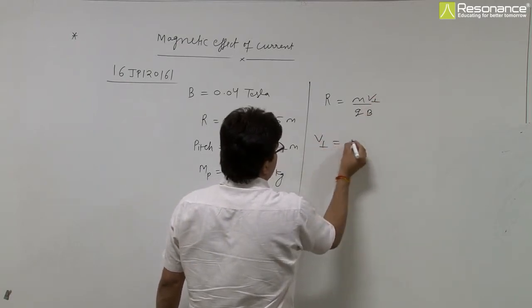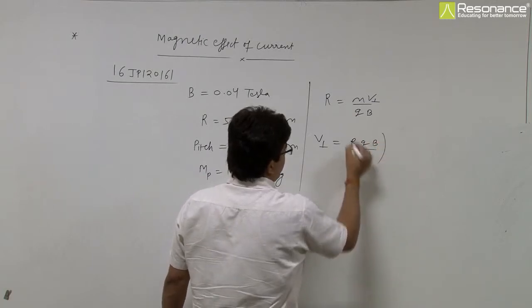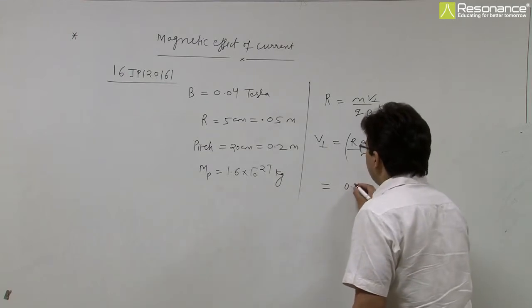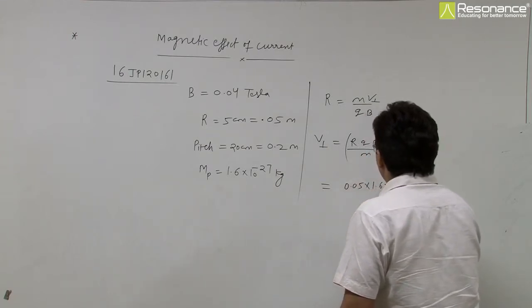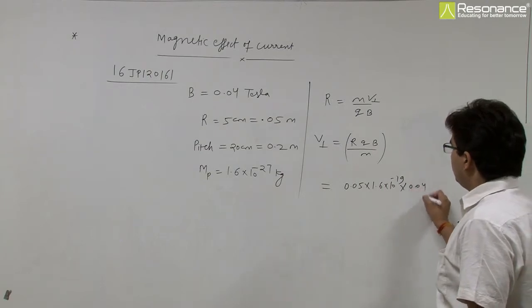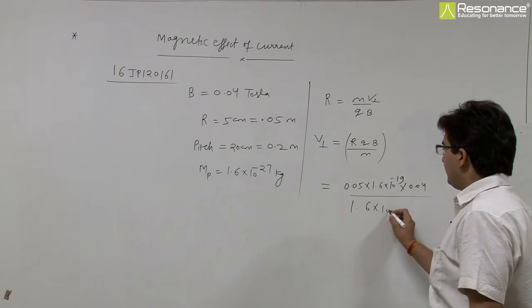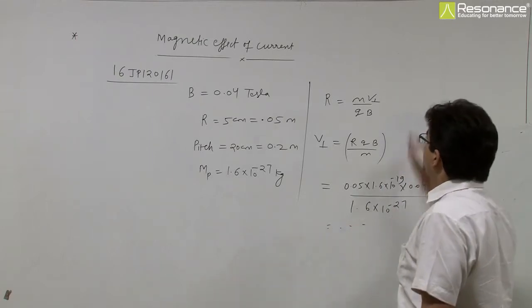We can find v perpendicular equals rqB by m. Radius is given 0.05, charge 1.6 into 10 to the minus 19, into magnetic field 0.04, divided by 1.6 into 10 to the power minus 27, and we can get v perpendicular.